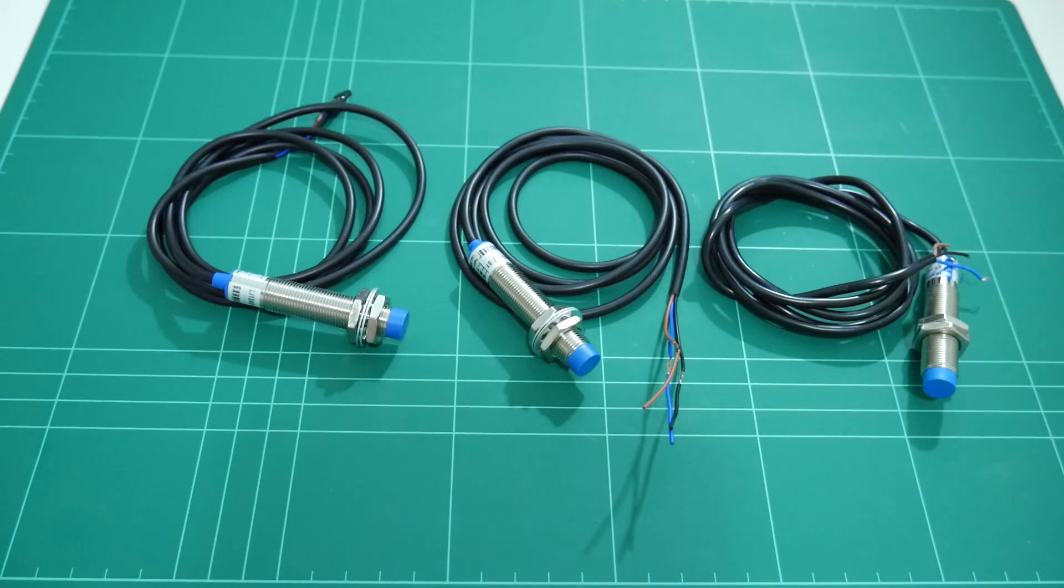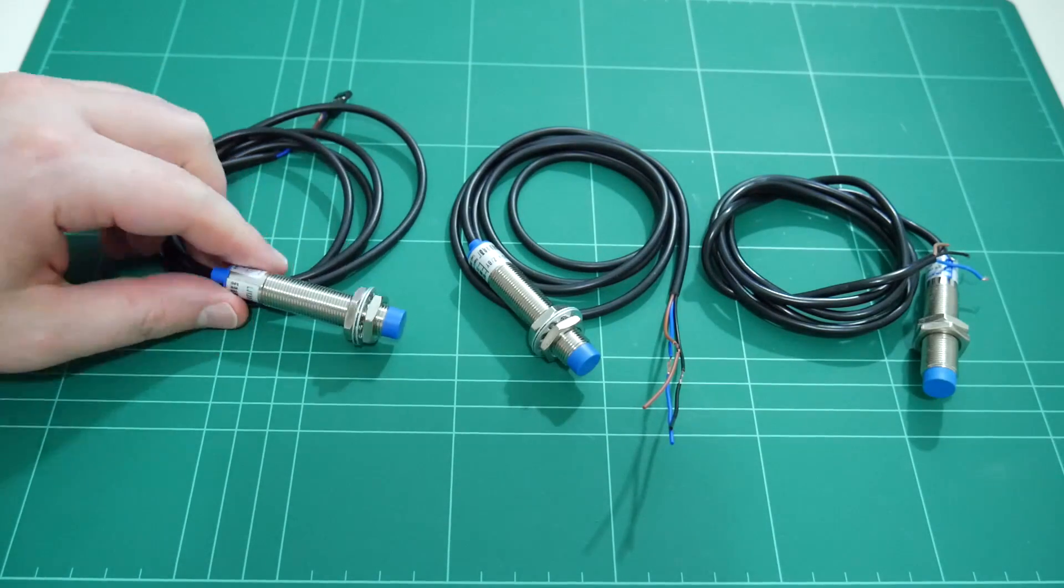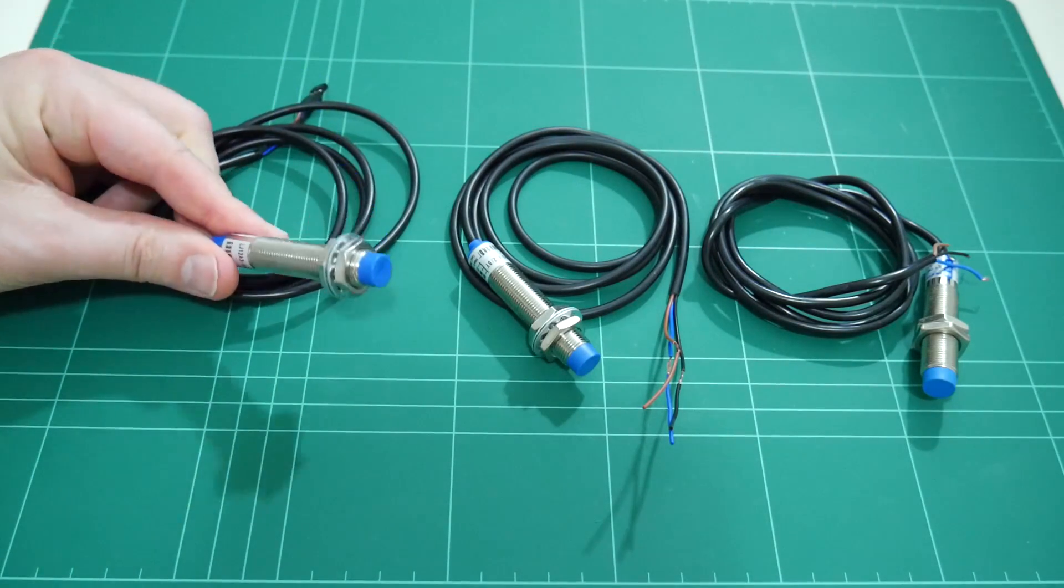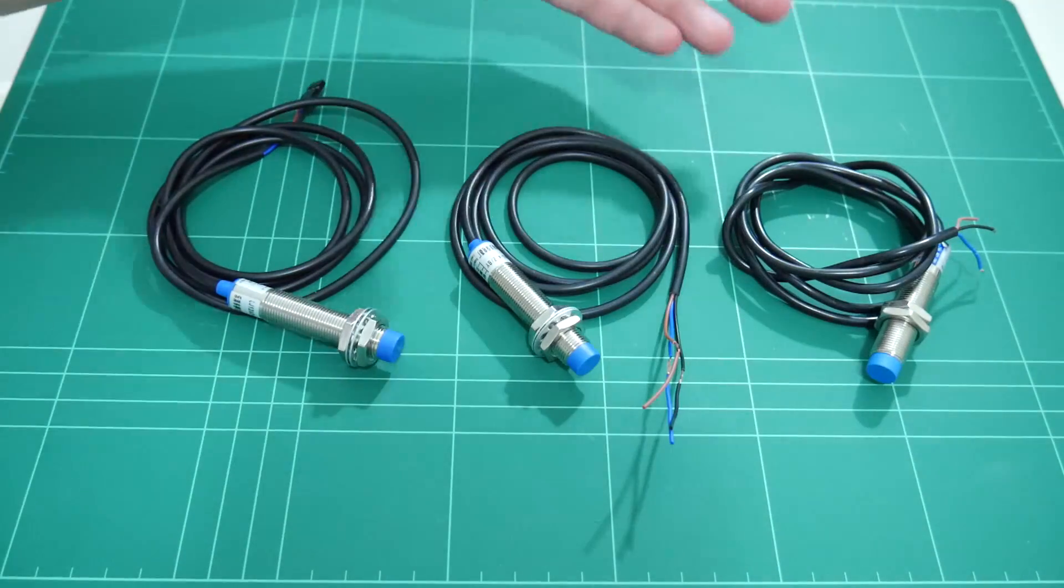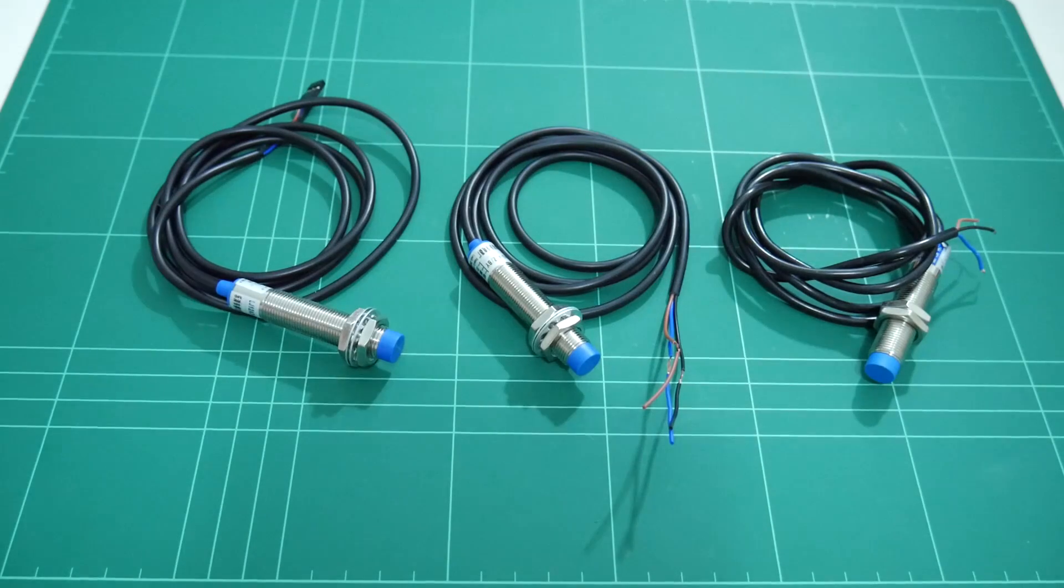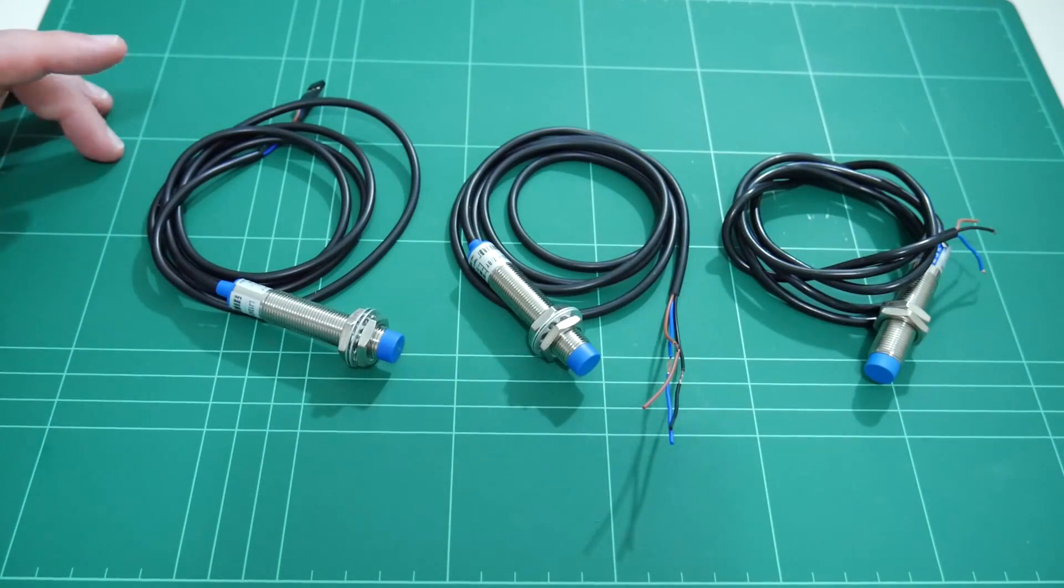However, there are some probes which do work at 5 volts. This PNP sensor does work at 5 volts, while this NPN sensor doesn't. Both of these purchased from Banggood, and reading various forums, it seems to be random if your sensor will work at 5 volts or not.